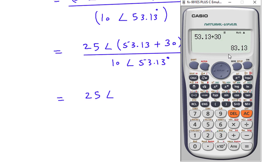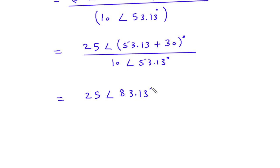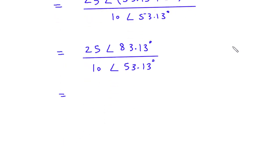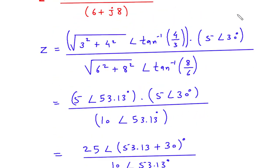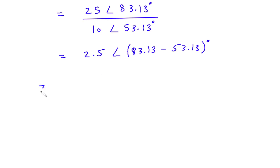So this will be 25 at an angle of 83.13 degrees (53.13 + 30), divided by 10 at an angle of 53.13 degrees. Since it is division, 25 divided by 10 is 2.5, at an angle of 83.13 minus 53.13 degrees, which is 30 degrees.